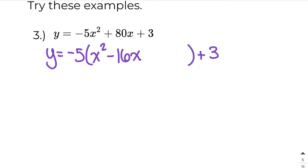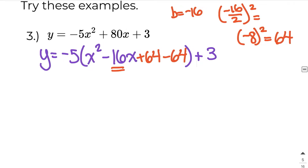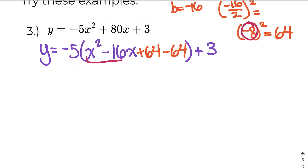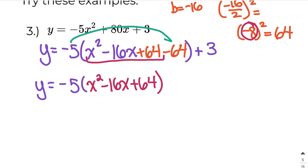To find the number that will complete this perfect square, I take the b value, which is negative 16, divide it by 2, and then square it. Negative 16 divided by 2 is negative 8, and negative 8 squared is positive 64. So I write plus 64, but I can't just add 64 without balancing it by also subtracting 64. Now this is my perfect square trinomial. I keep it inside my bracket, but I distribute the negative 5 through to the negative 64 to take it out. Negative 5 times negative 64 is positive 320, then I copy down the plus 3.